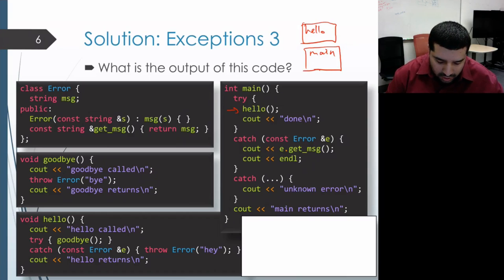And then the first thing that hello does is it prints out hello called, and then it proceeds to a try block within which it makes a call to the goodbye function. So we get an activation record for goodbye on our call stack.